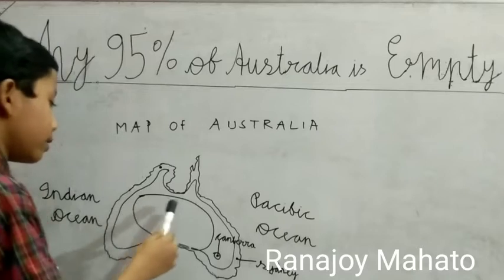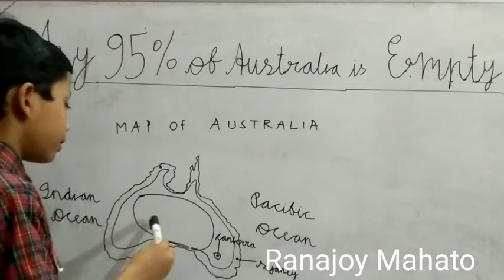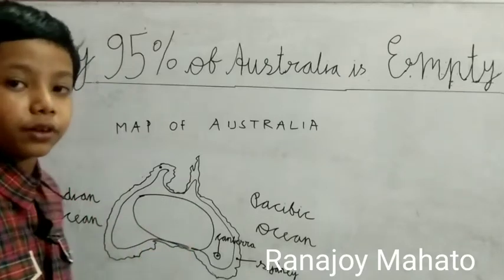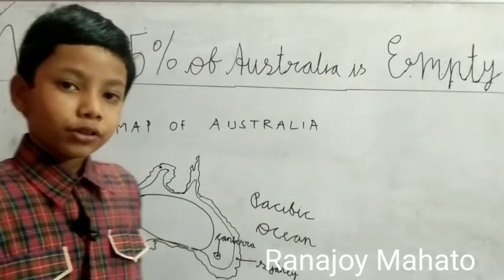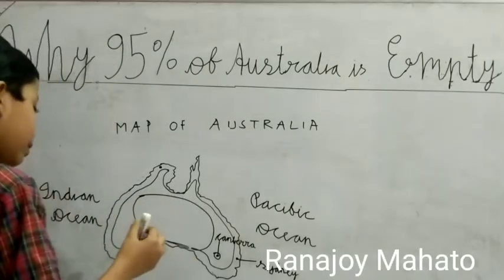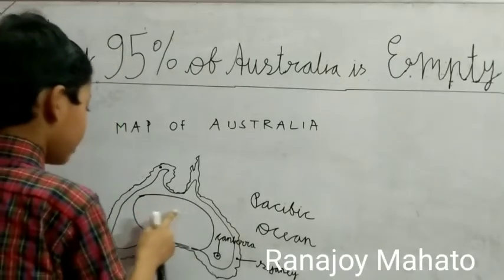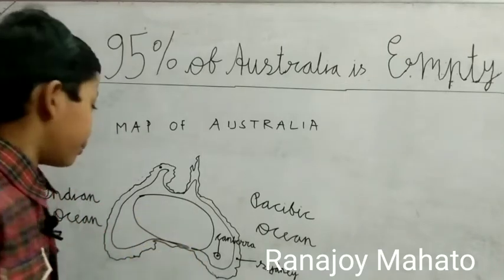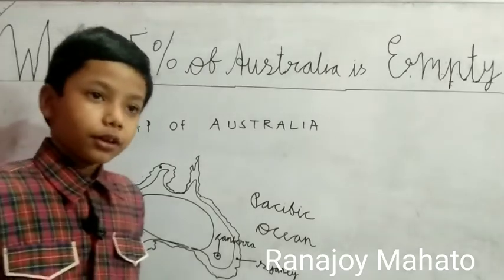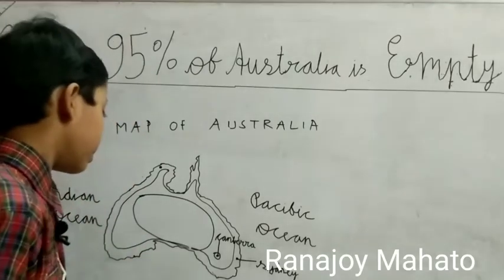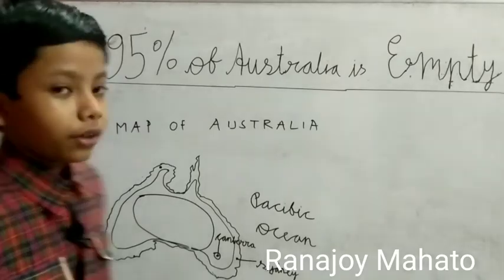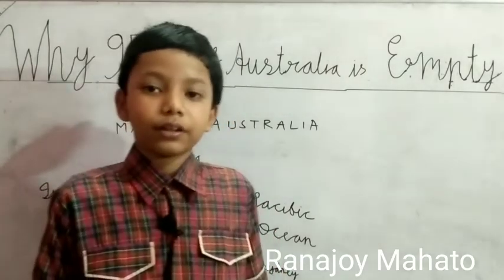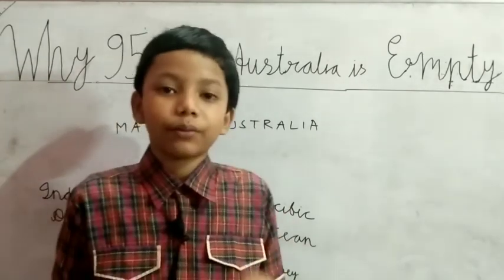So the answer is scarcity of water. People can't build buildings here due to scarcity of water. That's why this leftover land in Australia is not colonized by people. Although it's still part of Australia, it remains unused. Okay, that's all for today. Thanks for watching my video. Please like and subscribe. Bye!